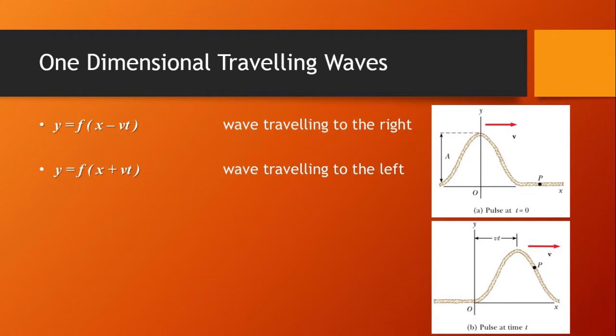We can see in these figures the pulse is traveling with speed v. In figure (a), when time equals zero, the shape of the pulse is given by y equals f(x). After some time, in figure (b), when time equals some t, the shape remains unchanged but the vertical displacement of point P of the medium is given by y equals f of (x minus vt).